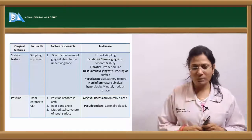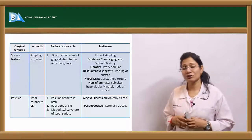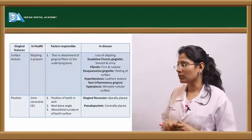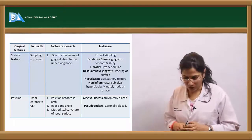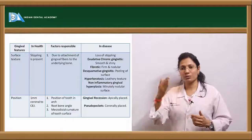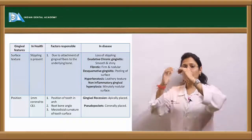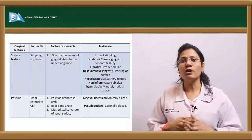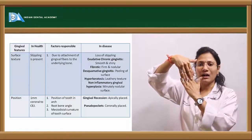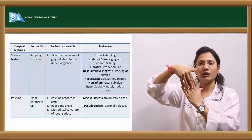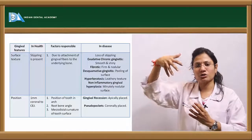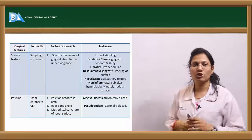The normal surface texture is stippling. The factors responsible for stippling include the attachment of gingival fibers to the underlying bone, and stippling is a specialized adaptation or reinforcement for function. Your epithelium is drawn into rete pegs, and your connective tissue is put into finger-like projections — the papillary part. These epithelial rete pegs and connective tissue finger-like projections bind together; the fibers pull the epithelium, creating surface elevations and depressions, which is what we call stippling.